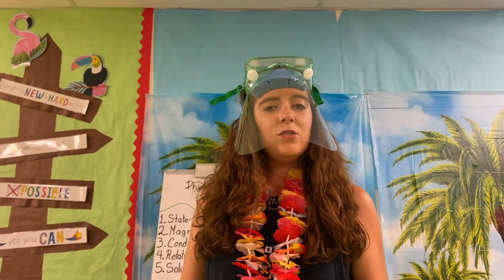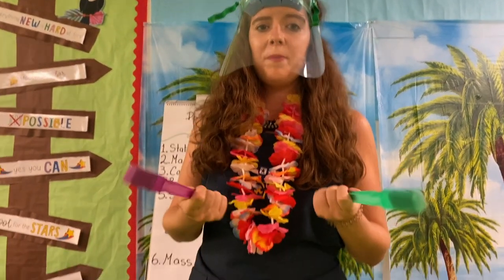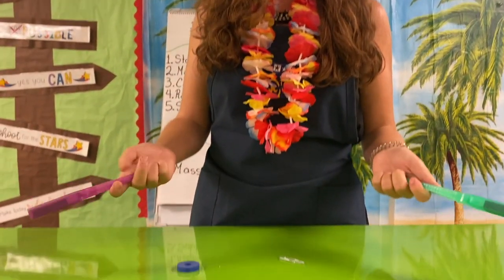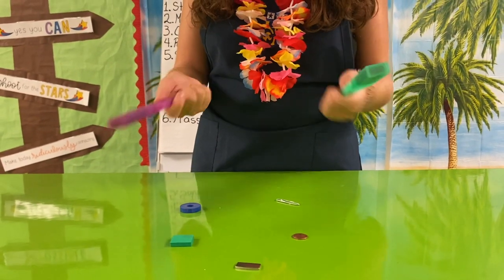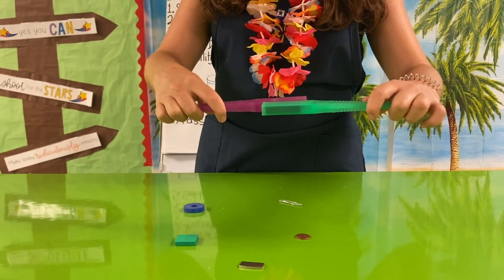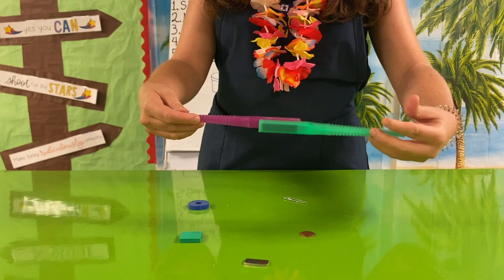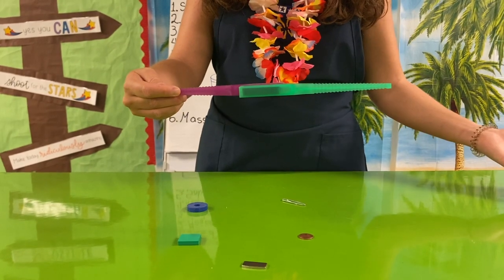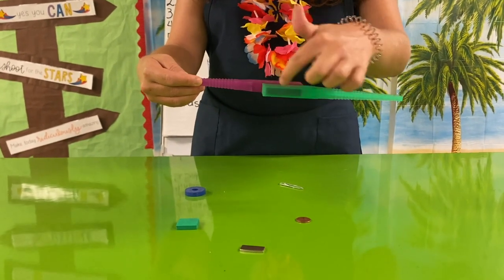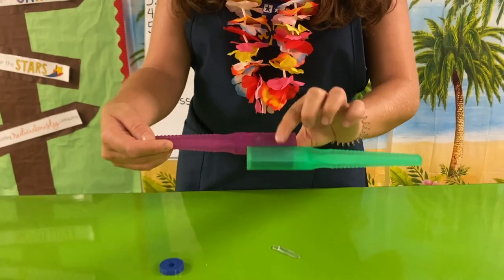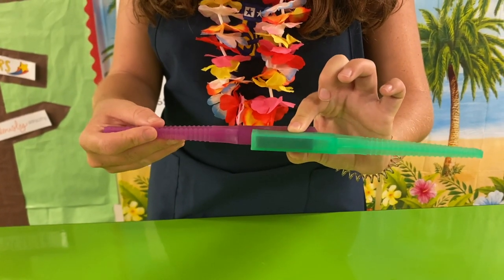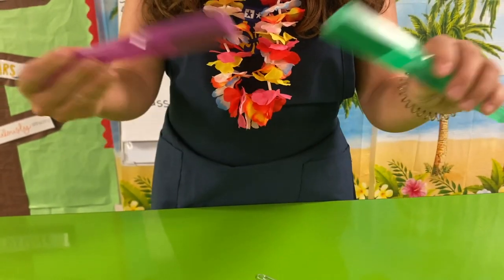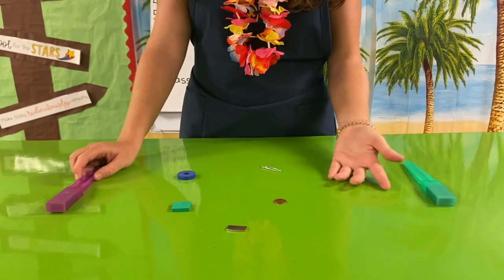First, we are going to take two magnets and see what happens. Apart from that, we are going to try magnet to magnet. You will see in the picture that the magnet to magnet cannot be separated because they have the same poles — they attract each other.